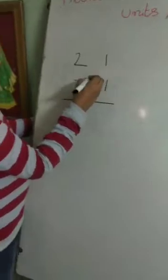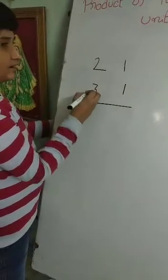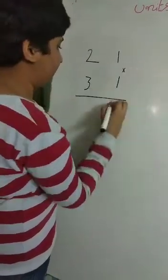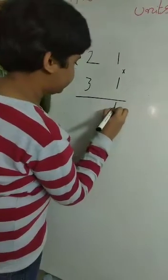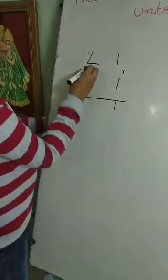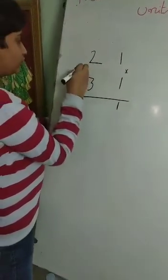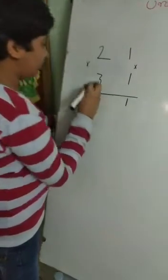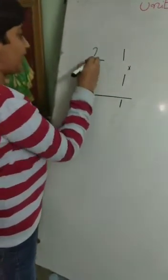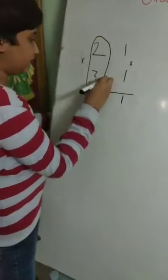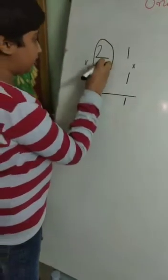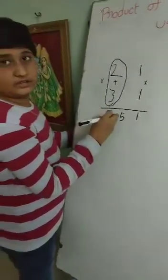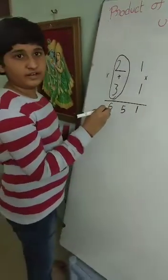In the unit place there is 1, and in the 10s place there is 2 and 3. Let us multiply the unit place: 1 into 1 is 1. And we will multiply the 10s place: 2 into 3 is 6. We write 6 here, and now we add 2 plus 3, which equals 5. So the answer of 21 into 31 is 651.